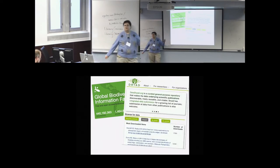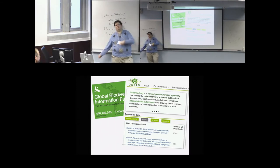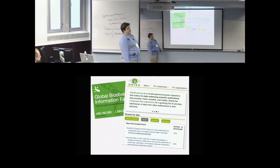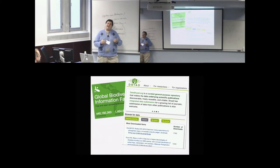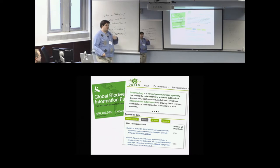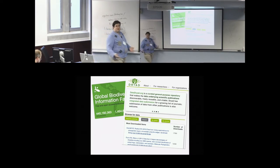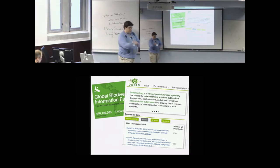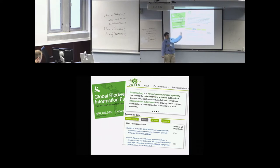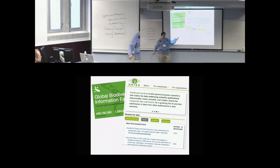Dryad: at some point all of you will put something on Dryad, because journals are requiring it. Why did TreeBase fail? Why don't people deposit trees? Because it was voluntary — 'wouldn't it be swell if we put our trees together?' People said yes but were busy. With Dryad, if you submit to Systematic Biology, you will put things on Dryad, or you will not get published. If you publish your data, you get more citations, your work is more useful, and you're a better scientist. There are R interfaces to download all this data.